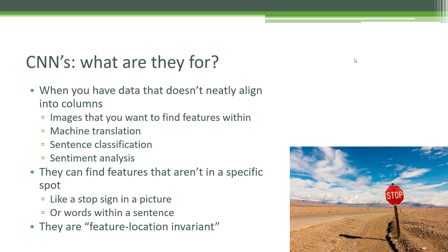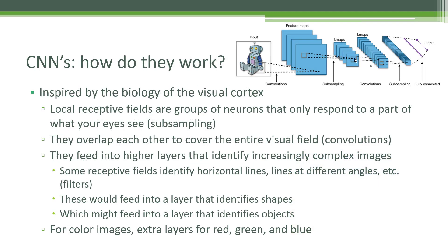CNNs are not just limited to image analysis. They can also be used for any problem where you don't know where the features you care about might be located within your data. Machine translation or natural language processing tasks come to mind — you don't necessarily know where the noun, verb, or phrase you care about might be in a sentence. Sentiment analysis is another application: you might not know exactly where a phrase indicating a happy or frustrated sentiment is, but a CNN can scan your data and pluck it out. And the idea behind it isn't really as complicated as it sounds.